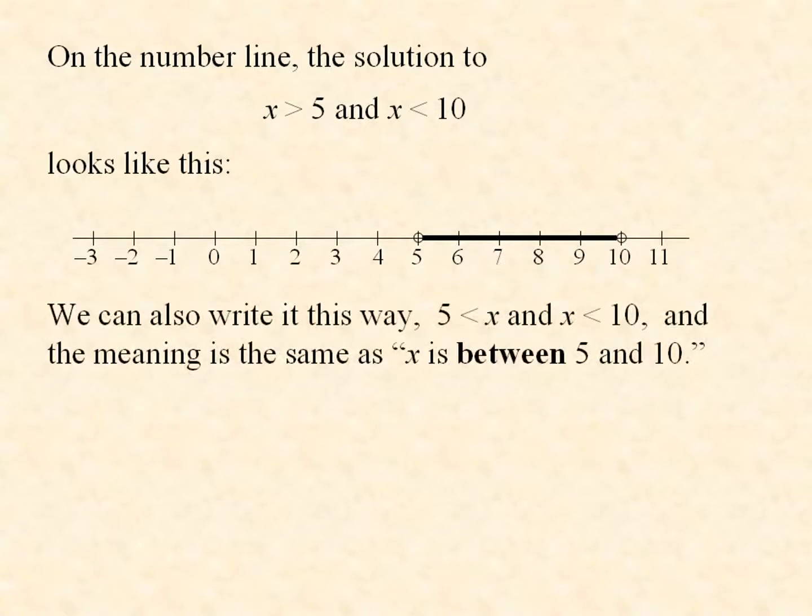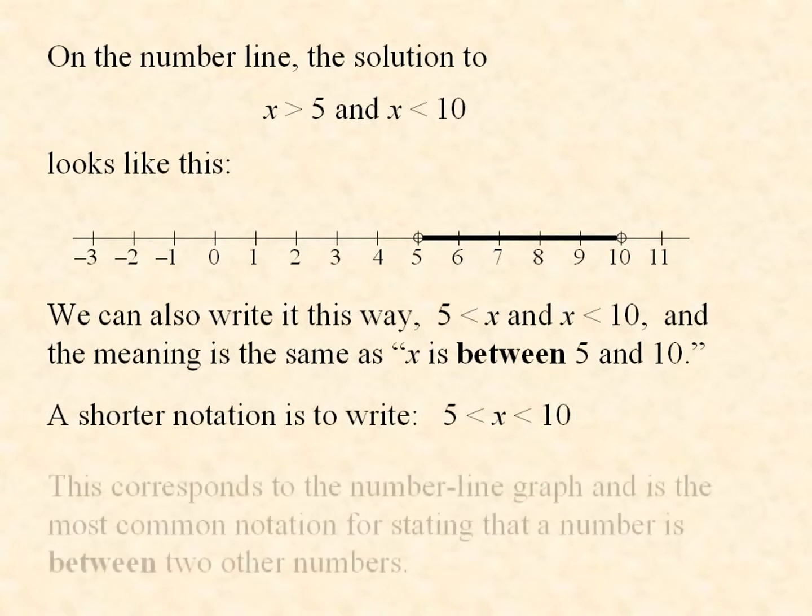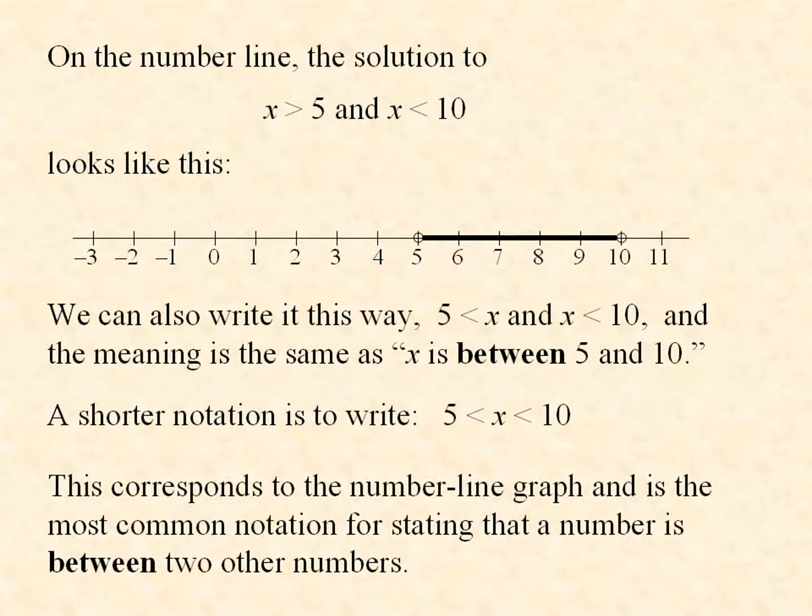We can also write it this way: 5 < x and x < 10. And the meaning is the same as x is between 5 and 10. A shorter notation is to write this: 5 < x < 10. This corresponds to the number line graph and is the most common notation for stating that a number is between two other numbers.